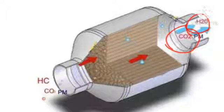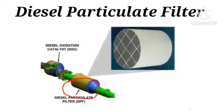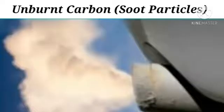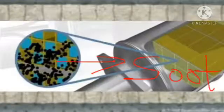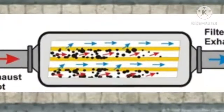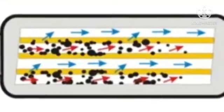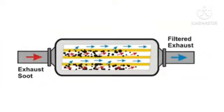This way, harmful gases are turned into harmless gases. Now let's understand about DPF — diesel particulate filters. The DPF is located after the DOC. It is a filter device designed to remove diesel particulate matter or soot particles from the exhaust gases of diesel engines.